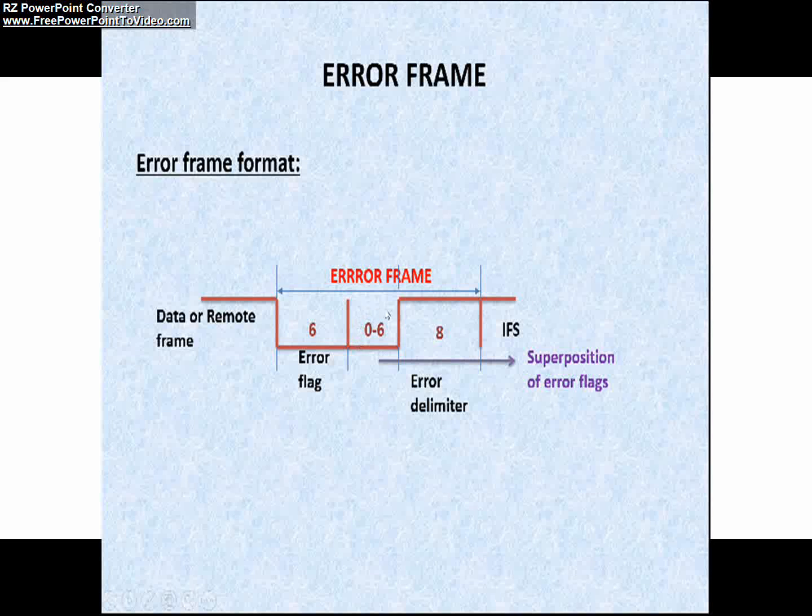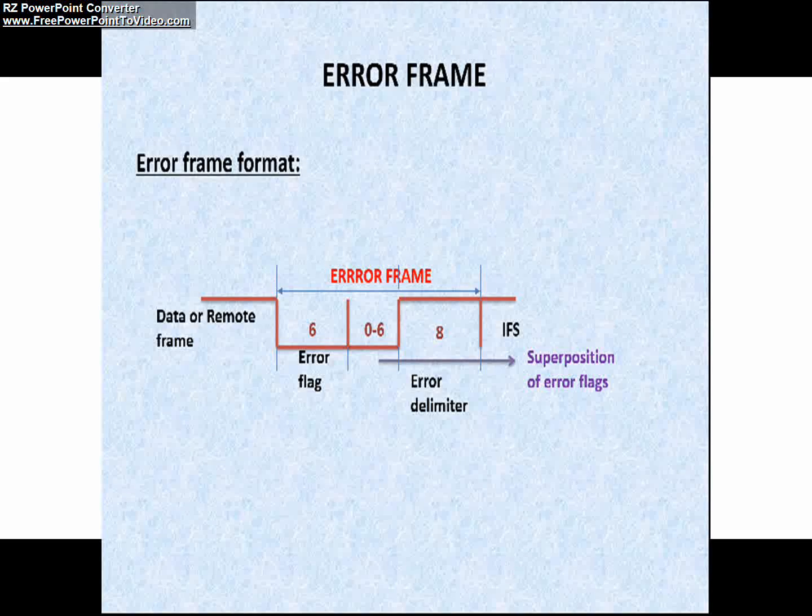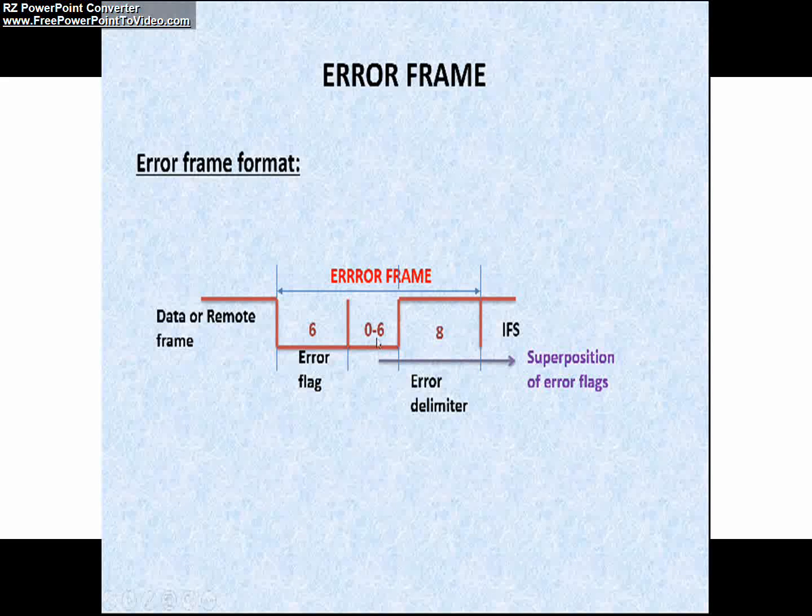How this field is generated? Simple, the other nodes which are connected to CAN network thought that stuffing error has occurred. So they started sending their error frames over the CAN bus. In such situation, this field will come into picture. That is superposition of error flag.